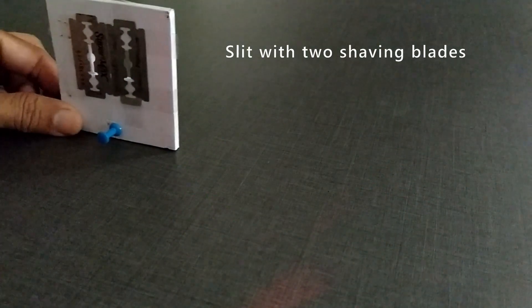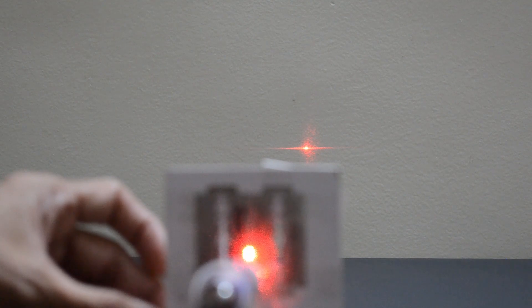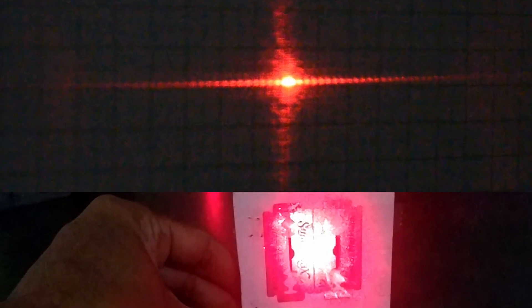Same is true if we place this slit formed with the help of two blades in the path. It seems light is not following the straight path, just like we assumed while exploring the laws of reflection as well as refraction.